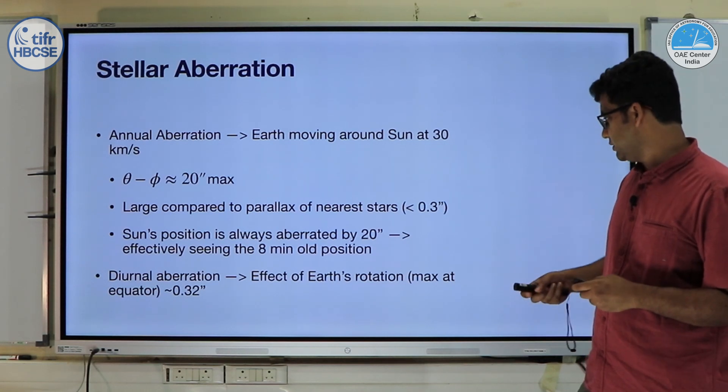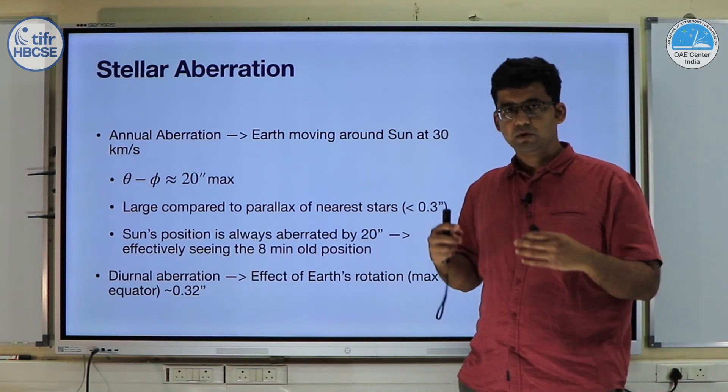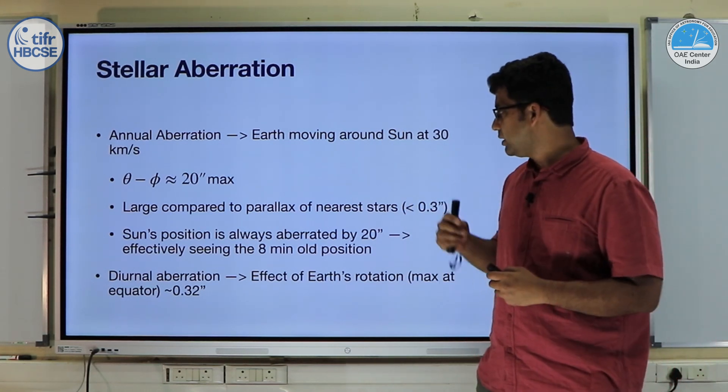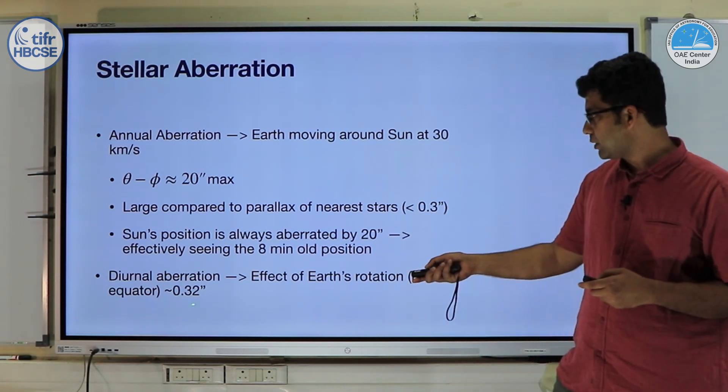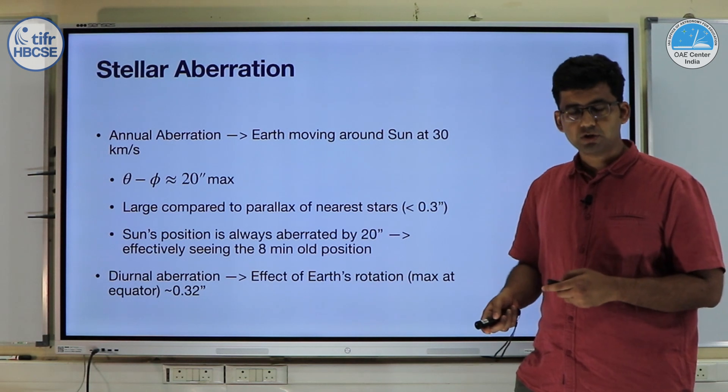There is also diurnal aberration which is the effect of Earth's rotation. This is not as much as the annual aberration. At the equator its effect is maximum and it is about 0.3 arc seconds. It's not very large.